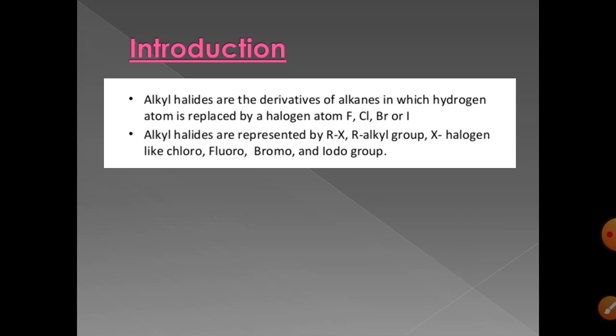Alkyl halides are the derivatives of alkanes in which a hydrogen atom is replaced by a halogen atom. Halogens mean chlorine, fluorine, bromine, and iodine. An alkyl radical is the derivative of alkanes — in alkane, if one hydrogen is replaced, it is converted into an alkyl group. For example, methane CH₄ loses one hydrogen to become CH₃, known as an alkyl radical represented by R. If any halogen makes a bond with this alkyl radical, it is known as an alkyl halide, represented by RX.